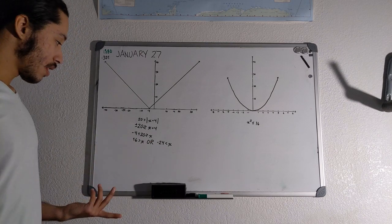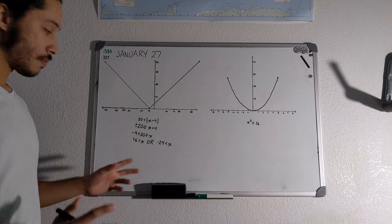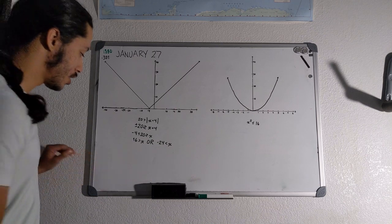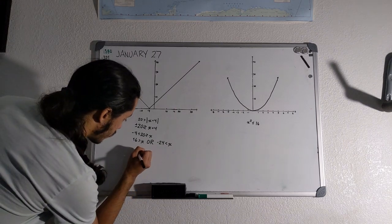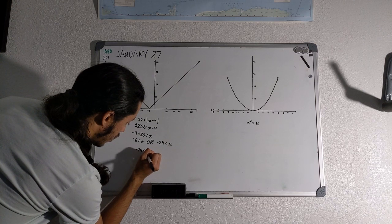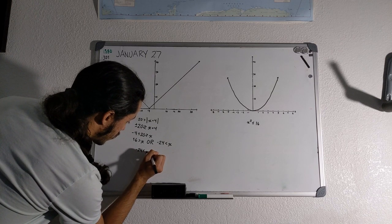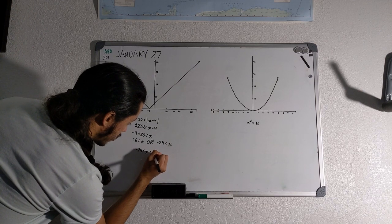And so from here, you just apply logic to see if you can merge these two ranges like so, right? Negative 24 less than x less than 16.